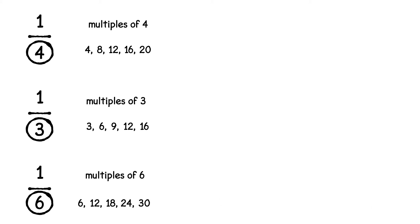Now we need to find the lowest common multiple, the smallest number that is common to all three lists. And here that's twelve.